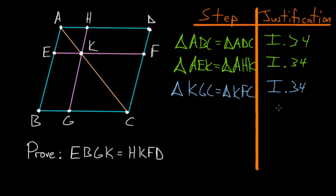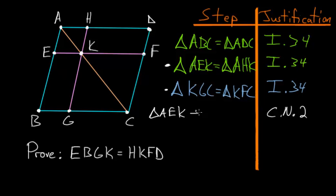From here we use Common Notion 2, which says that if we add equals to equals, the results will be equal. Looking at the results for triangles AEK and AHK, we add triangle KGC to each side: triangle AEK plus triangle KGC equals triangle AHK plus triangle KGC.